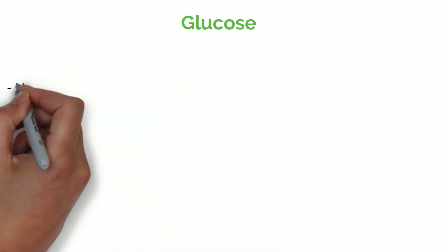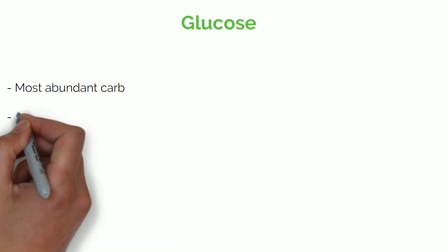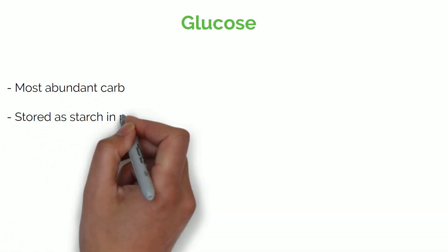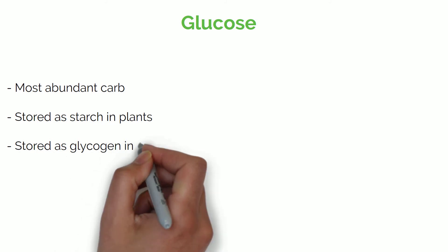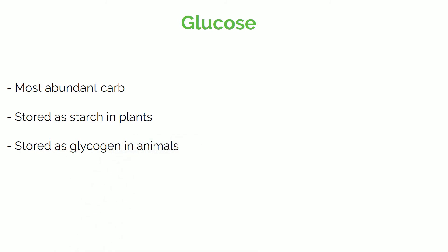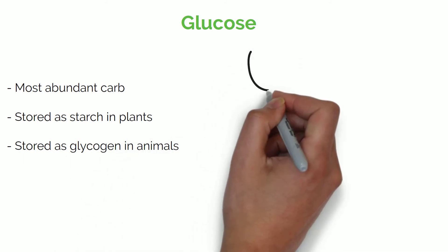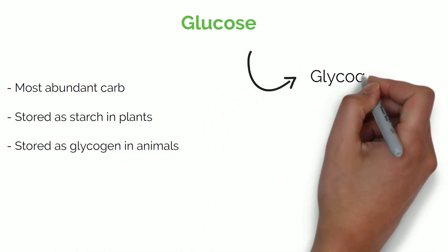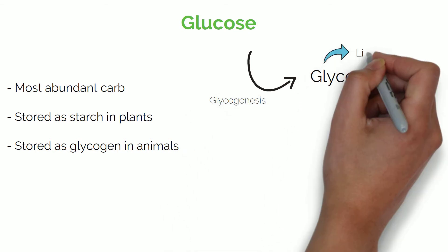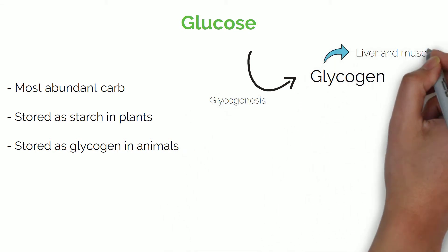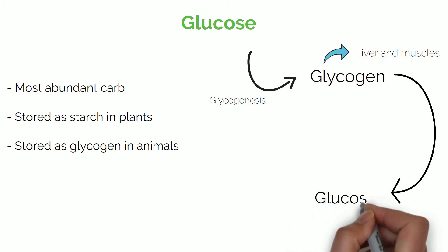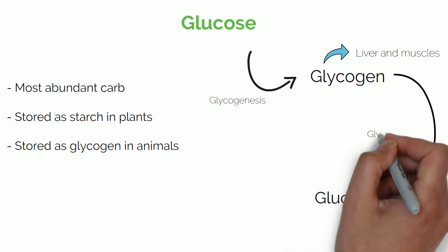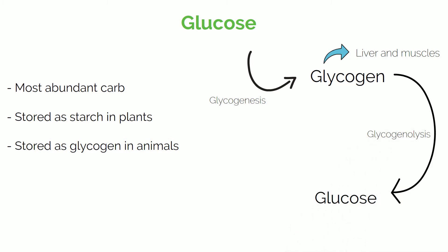Glucose, which is a sugar, is the most abundant carbohydrate. It is stored as starch in plants, and in animals it is stored as glycogen. When we consume too much glucose, it is converted in our bodies into glycogen and stored in the liver and muscles. When we need glucose to fuel our bodies, we use the stored glycogen and break it down to form glucose again, which can then be used by our cells.